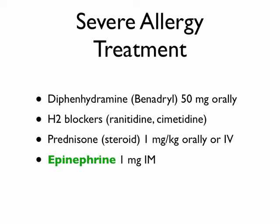If I consider the allergy a bit more severe, I'll add prednisone — a steroid — at 1 milligram per kilogram, given orally or IV, as both routes work similarly in terms of speed and effectiveness. I'd use the IV route if there's significant swelling in the mouth or if the patient is vomiting and can't take oral pills; otherwise oral is fine. If their blood pressure is a little low or I can hear some wheezing, I'm going to give them a dose of epinephrine — 1 milligram as an intramuscular injection.